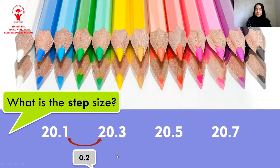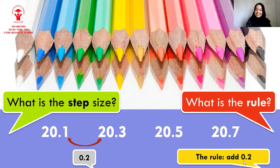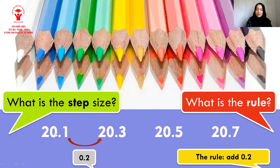Next, what about the rule? Do you know what is the rule of this sequence? Yes, the rule is adding 0.2. So from the first term to the second term, we need to add 0.2. So 20.1 plus 0.2, we get 20.3. And the rule is always the same for all numbers in the sequence.